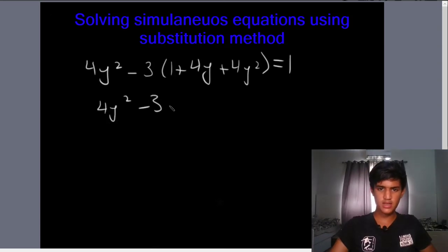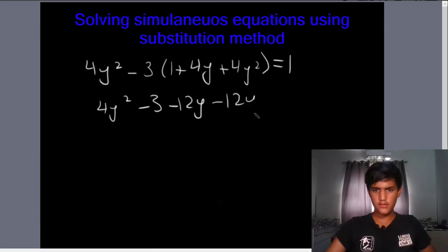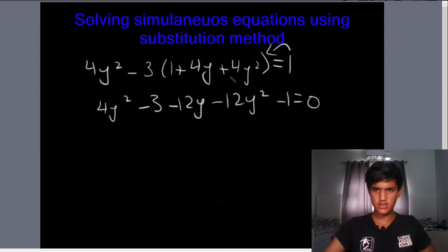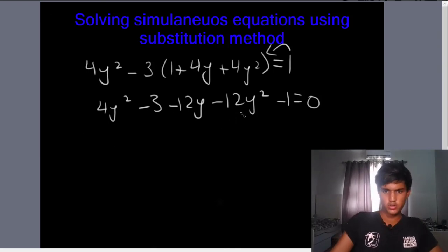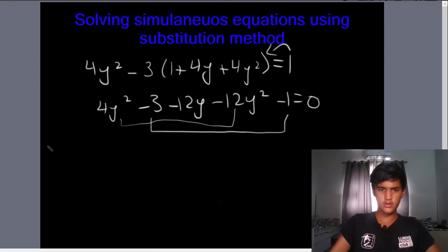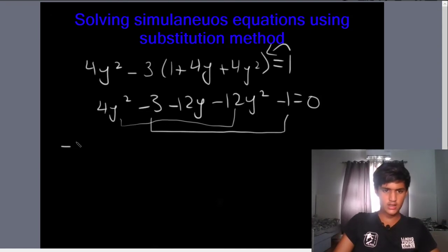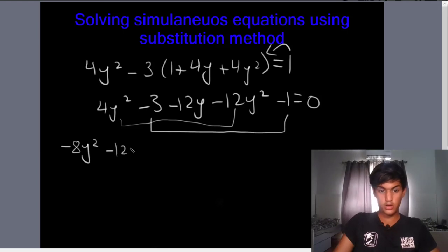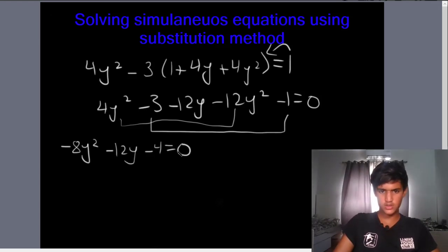So we have 4y squared minus 3 minus 12y minus 12y squared, and we bring the 1 to this side making it minus 1, equal to 0. Combining like terms: 4y squared minus 12y squared gives minus 8y squared, and minus 3 minus 1 gives minus 4. This leaves us with the equation 8y squared minus 12y minus 4 is equal to 0.